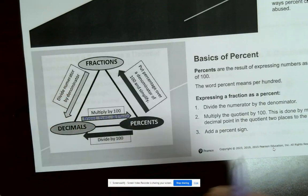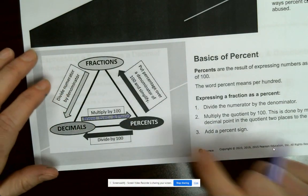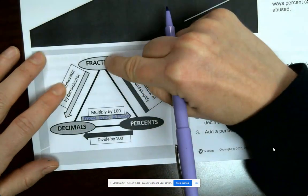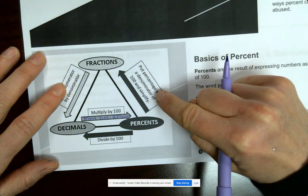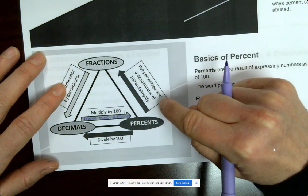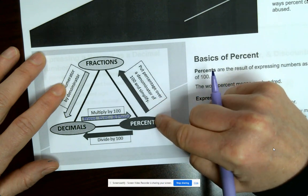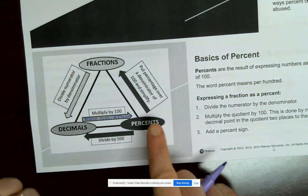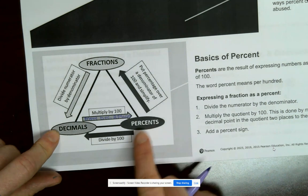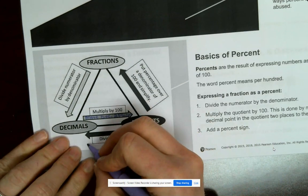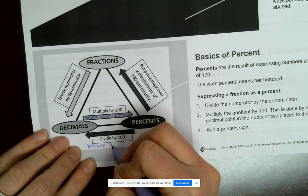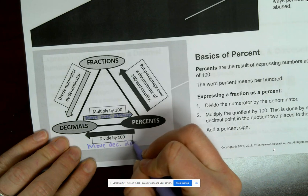So see how this is going to the right? So move two places to the right. If you want to go percent to fraction, you're going to put the percent over a denominator of 100 and simplify because percent means out of 100. To go from percent to decimal, you divide by 100.